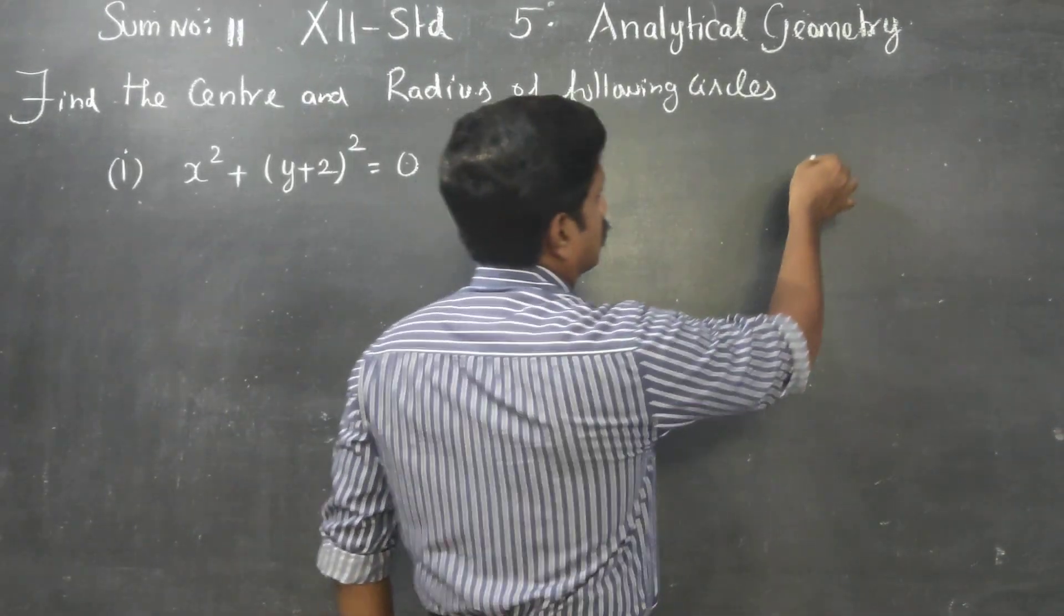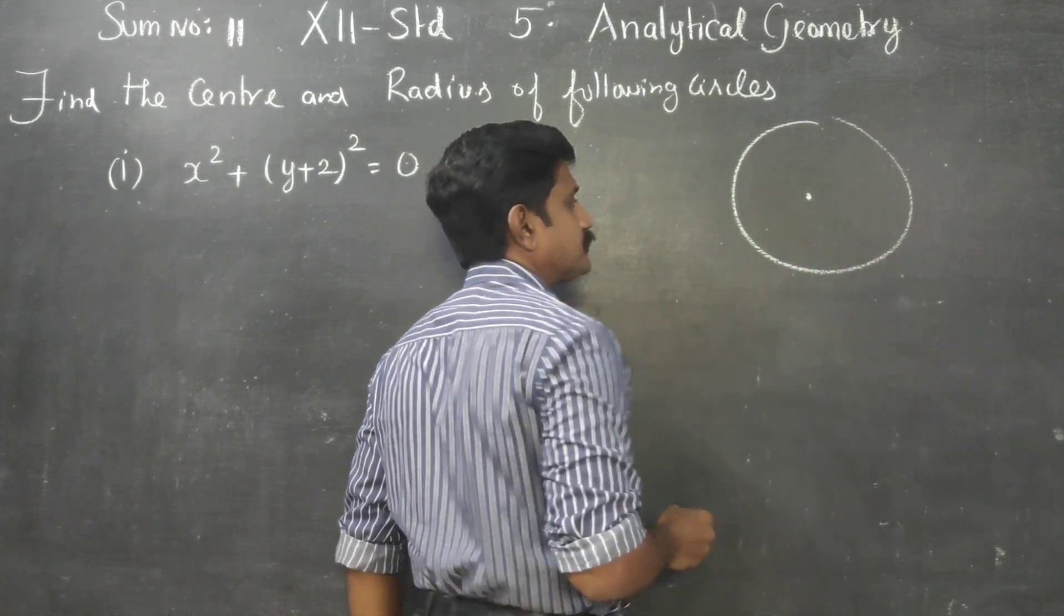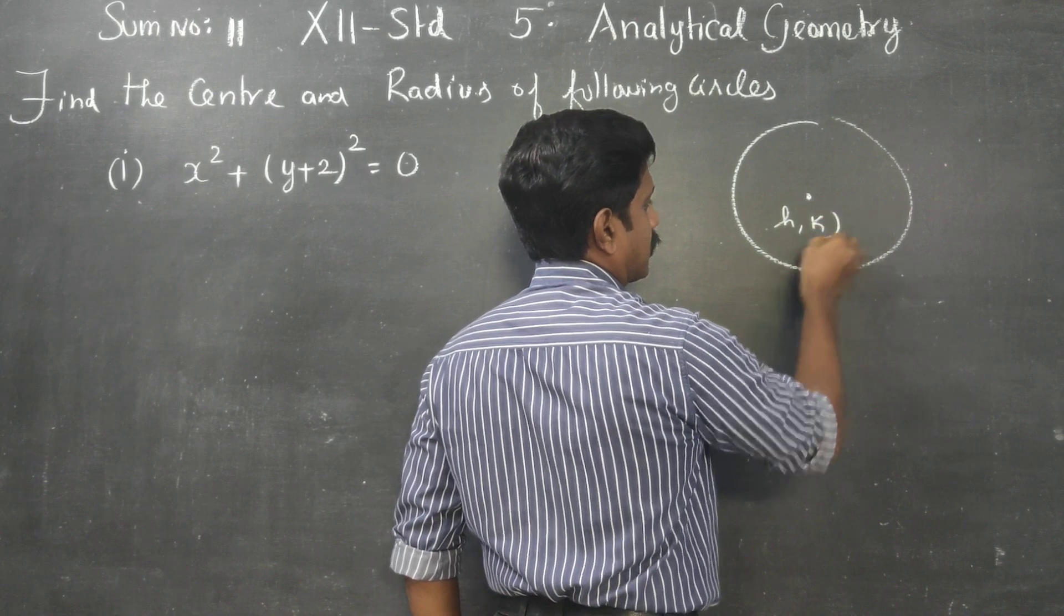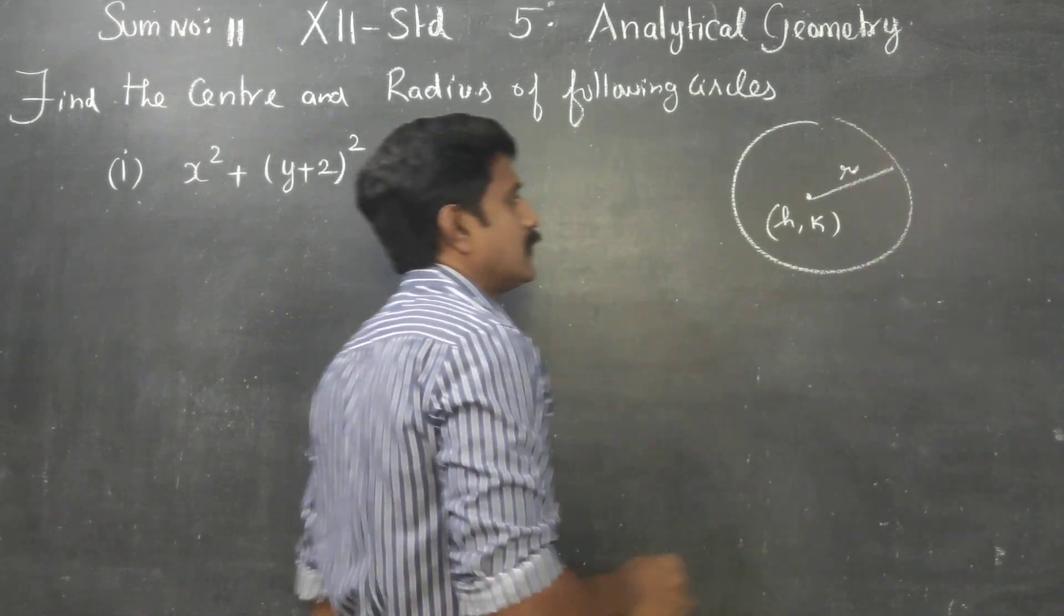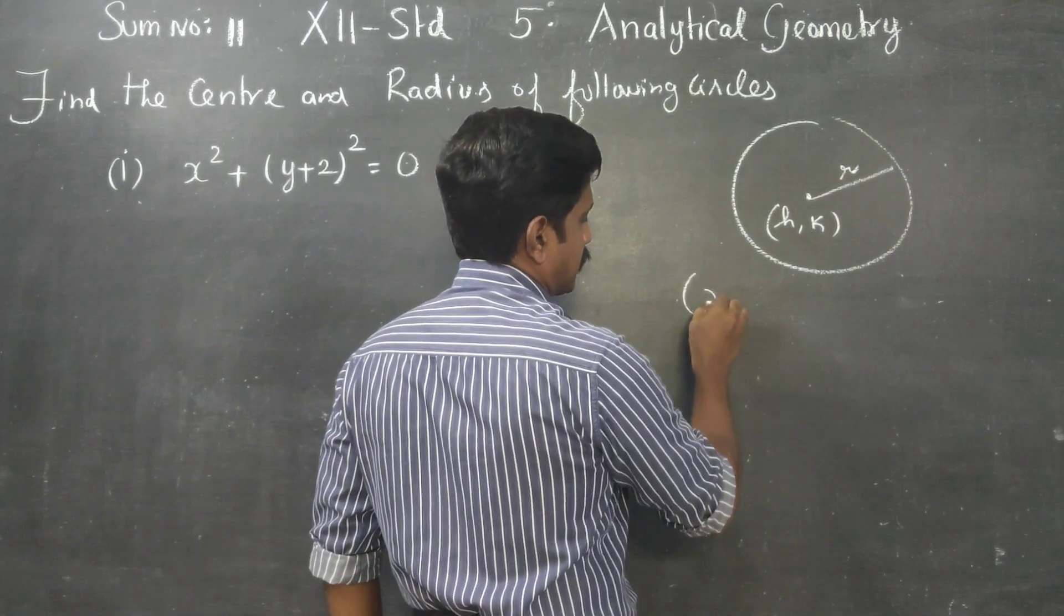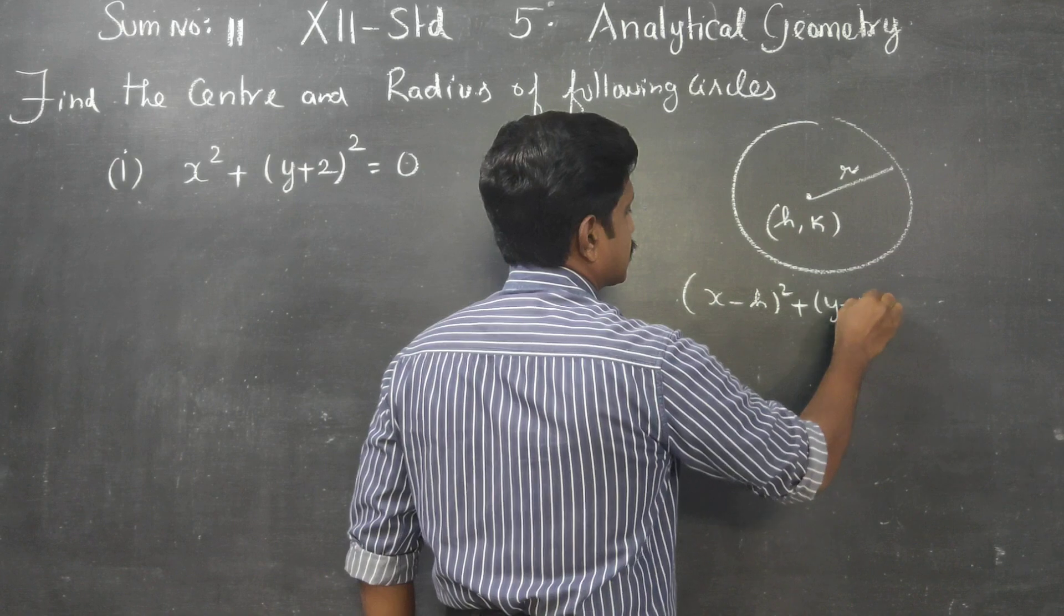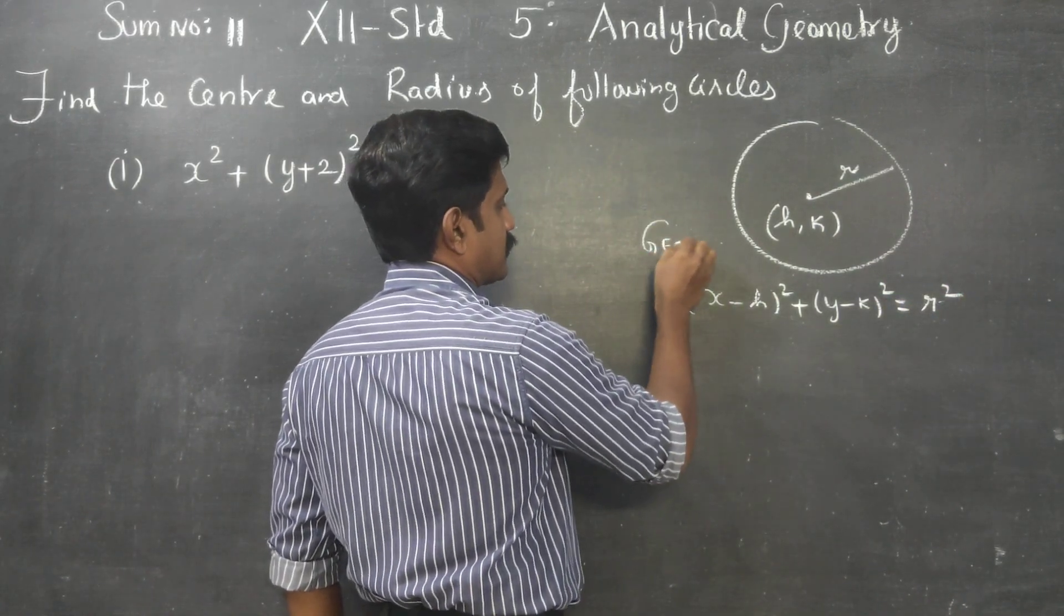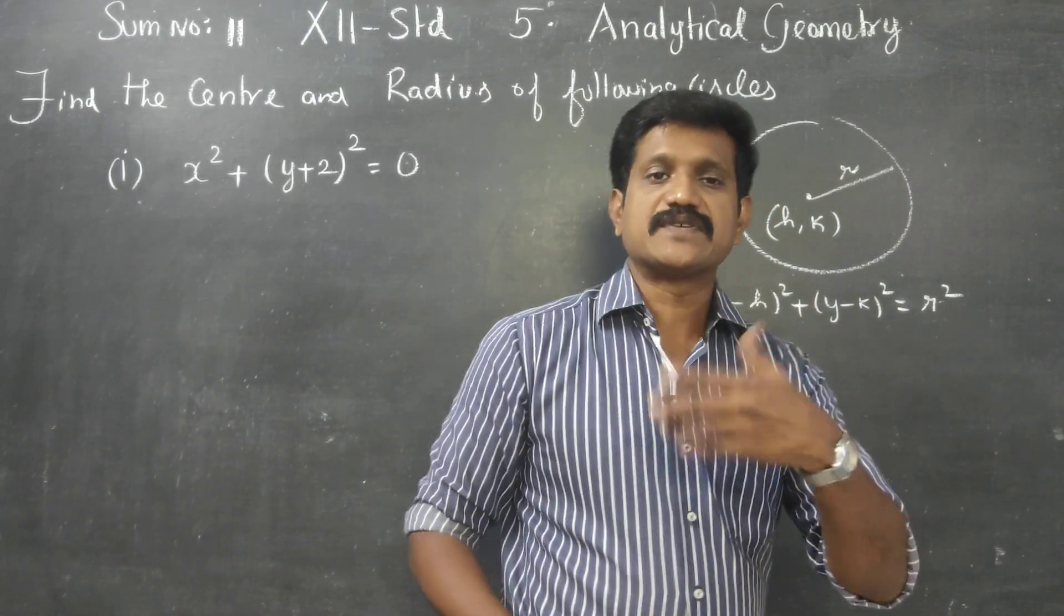A circle has center (h,k) and radius r. Therefore, it can be represented by (x-h)² + (y-k)² = r². This is the general equation or formula to find the equation of a circle.